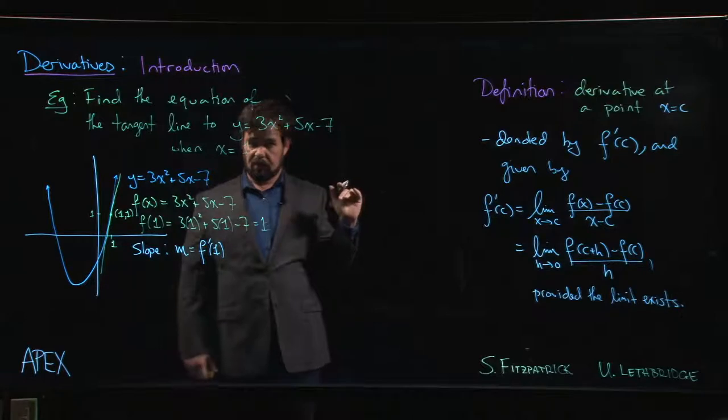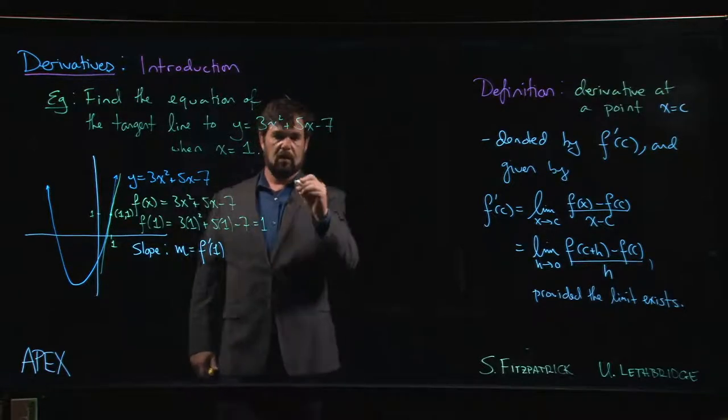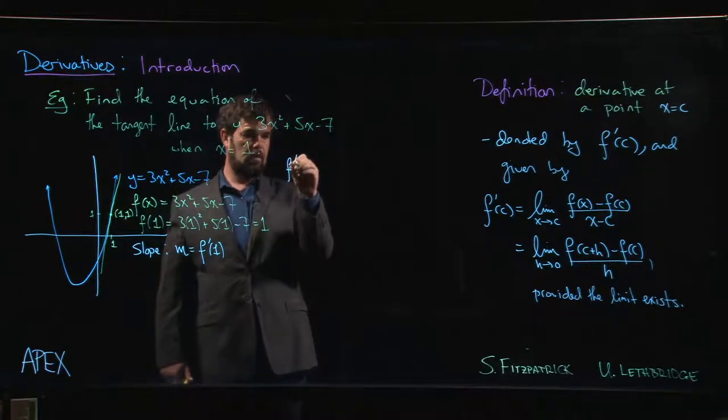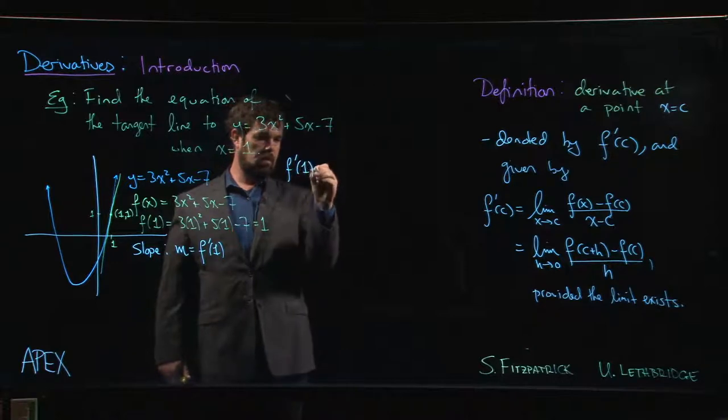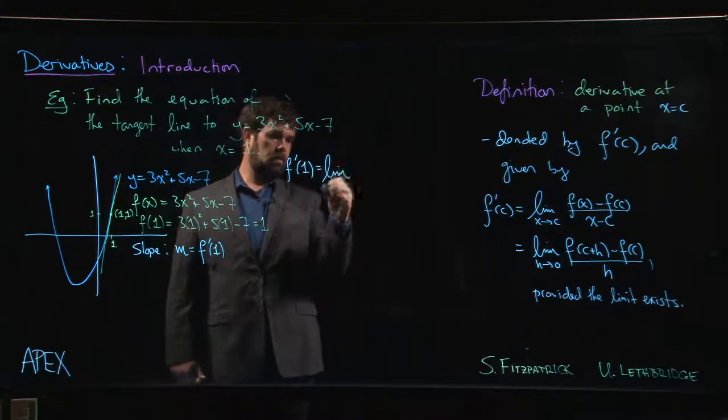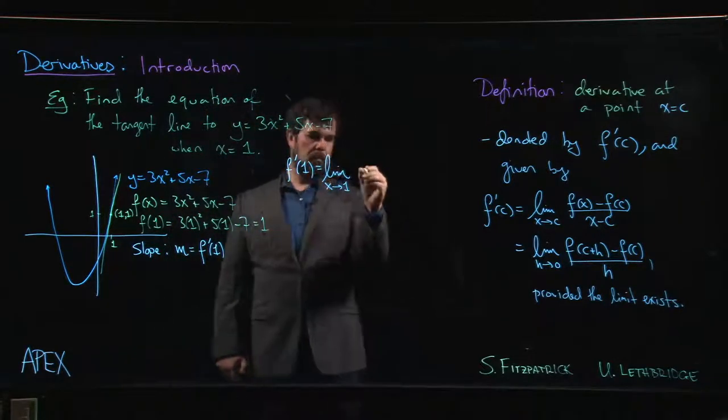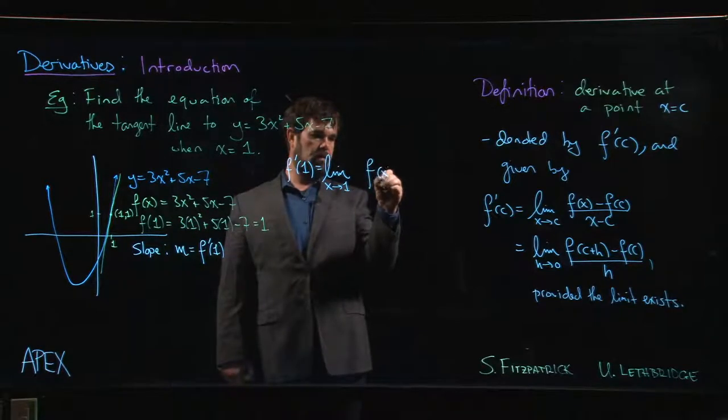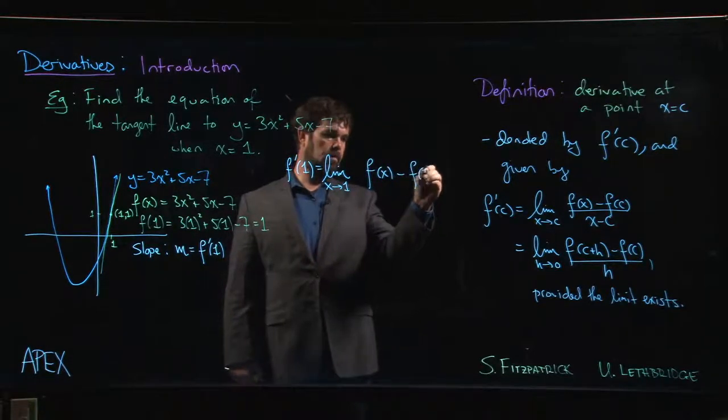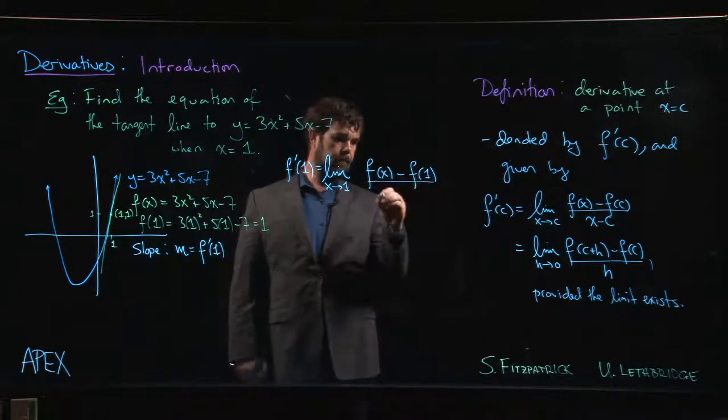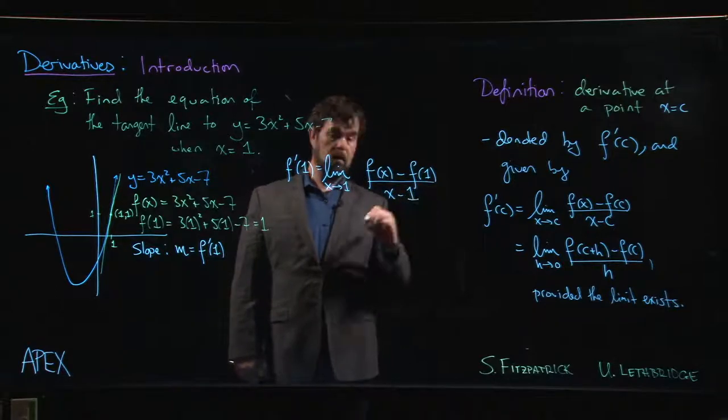Let's use the first version of the definition. So f prime of 1 is going to be the limit as x approaches 1 of f of x minus f of 1 over x minus 1.